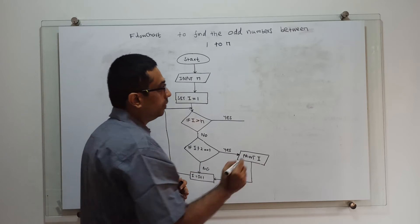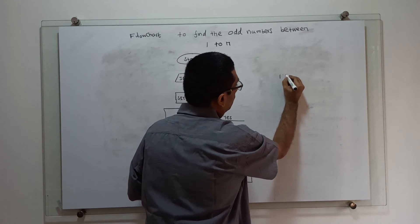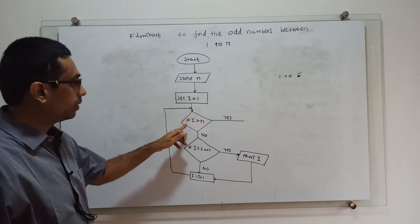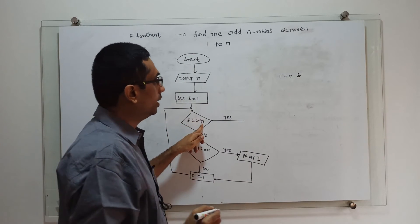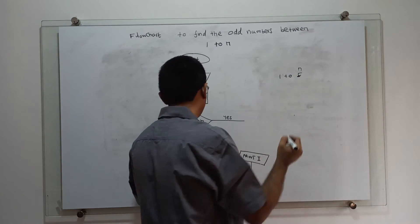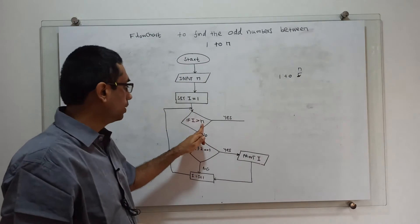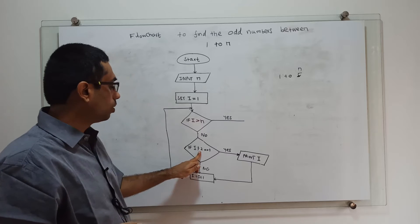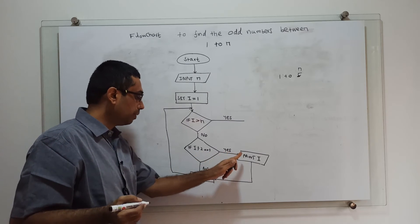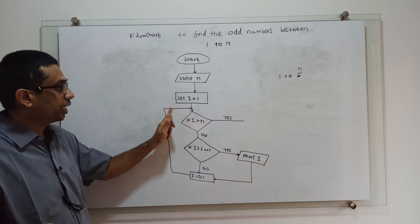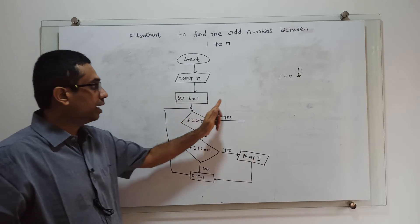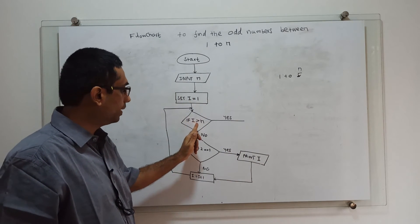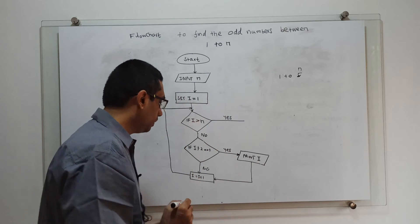For example, with i going from 1 to 5 and n equal to 5: first, it checks 1 greater than 5 — no. Then 1 modulo 2 equals 1, so it prints 1 and increments. Now i becomes 2. It checks 2 greater than 5 — no. Then 2 modulo 2 equals 0, so it does not print. The i value simply gets increased. Now i equals 3.